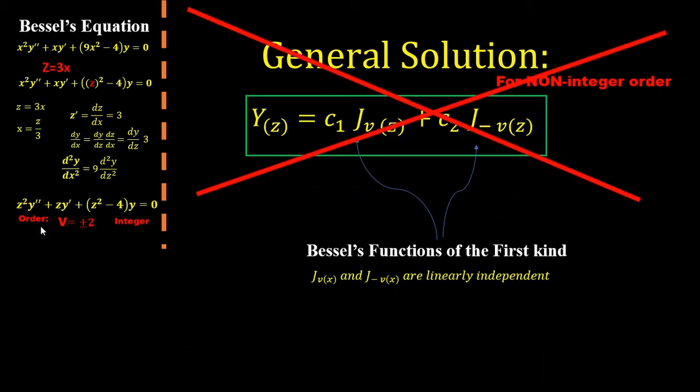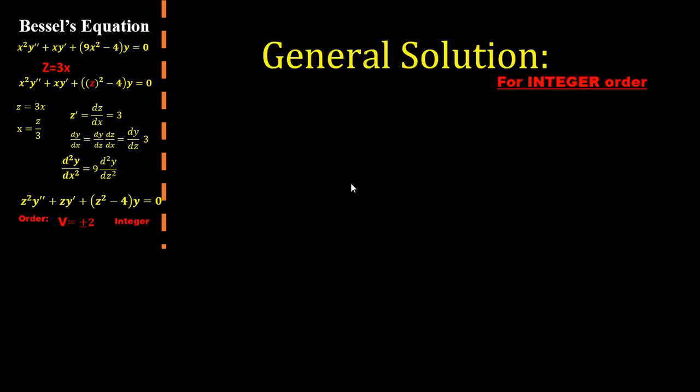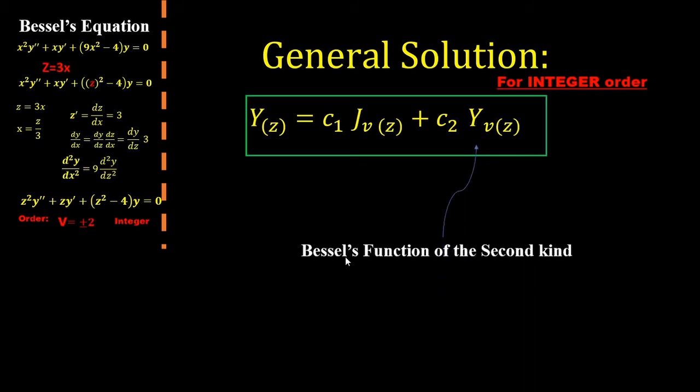But, we are working with an order that is an integer. Therefore, our two functions would not be linearly independent anymore, so it needs to be tweaked a little bit. Therefore, the general solution for integer order will look like this. The j is still the same like it was before, but the y will be a Bessel function of a second kind.